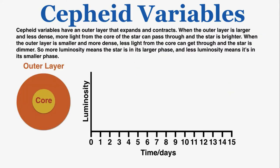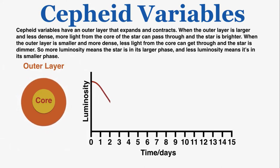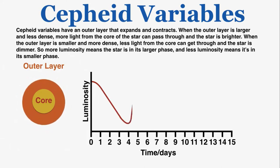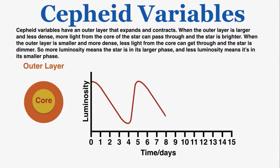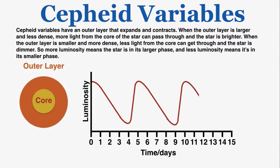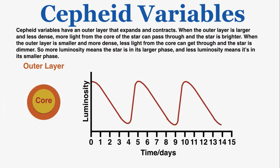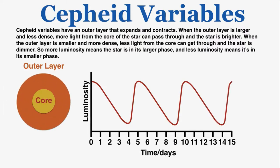Cepheid variables have an outer layer that expands and contracts. When the outer layer is larger and less dense, more light from the core of the star can pass through and the star is brighter. When the outer layer is smaller and more dense, less light from the core can get through and the star is dimmer. So more luminosity means the star is in its larger phase, and less luminosity means it's in its smaller phase.